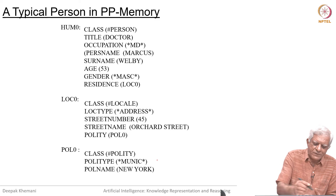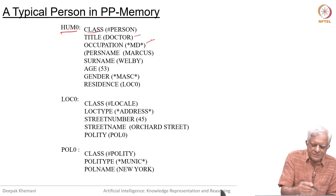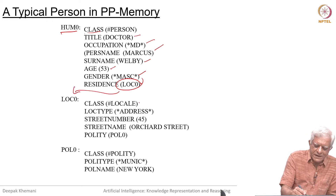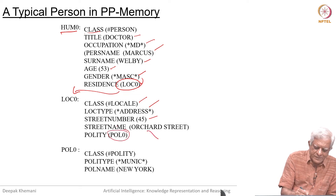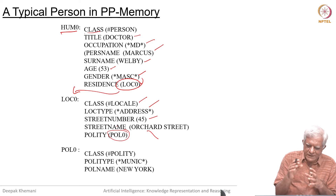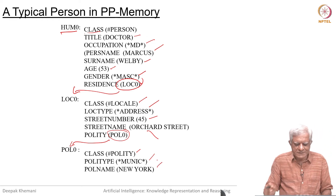How are people represented? We have tokens like Hume 0. There is a class of category person, title doctor, occupation MD, personal name with first name Marcus and surname Wellby, age implicitly in years, gender masculine, and residing at a particular location. That location is a class locale with locale type address, a street number, street name, and a quality describing the organization or the village or town or country. In this example, it is of quality type municipality and its name is New York. So you could describe a person using all these things.